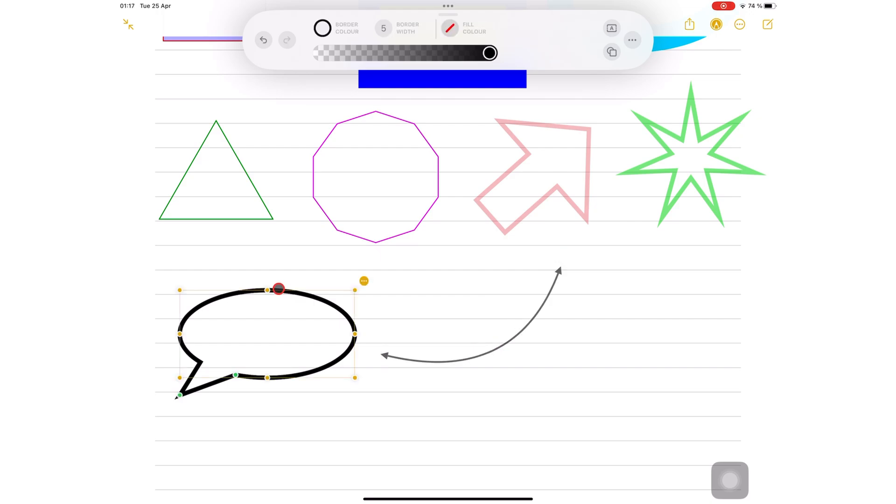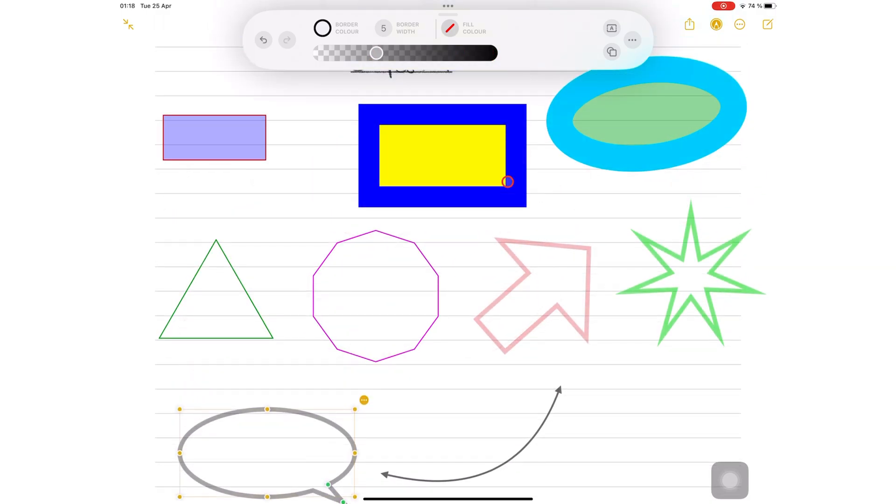With all the shapes, you can change the opacity of the whole shape, which includes its border and fill color at once.